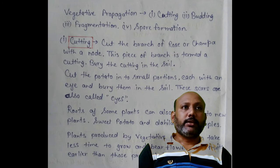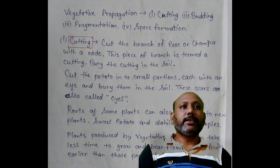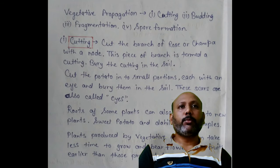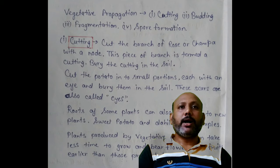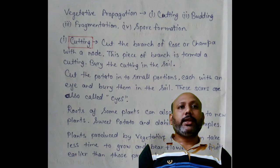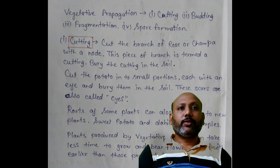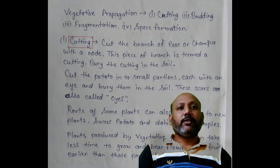Cutting, budding, fragmentation and spore formation are the modes of vegetative propagation. For cutting, cut the branch of a rose or champa with a knot — this piece of branch is termed as cutting. Bury the cutting in the soil. You can also cut a potato into small portions each with an eye and bury them in the soil.